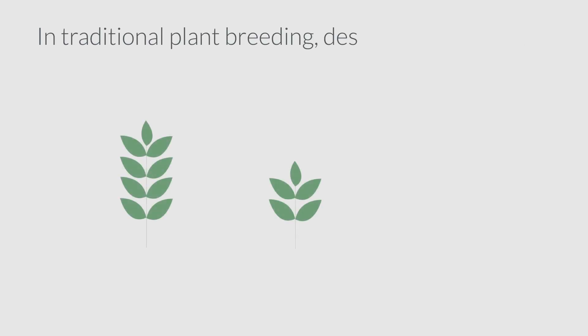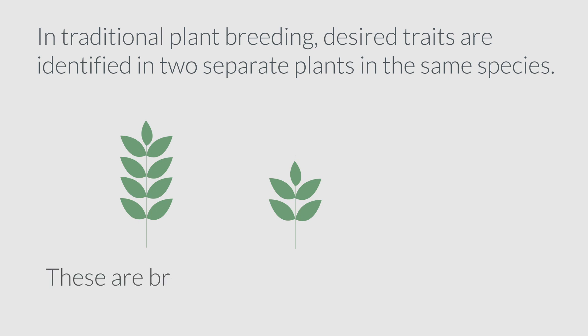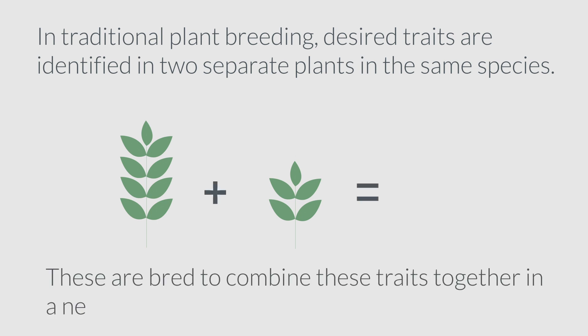In traditional plant breeding, desired traits are identified in two separate plants in the same species. These are bred to combine these traits together in a new variety.